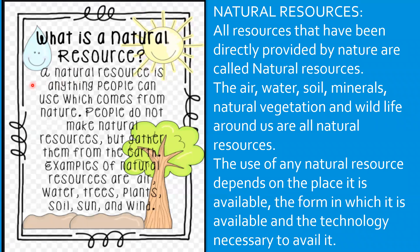A natural resource is anything people can use which comes from nature. People do not make natural resources, but they can gather them from the earth. Examples of natural resources are air, water, trees, plants, soil, sun, and wind. All resources that have been directly provided by nature are called natural resources. The air, water, soil, minerals, natural vegetation, and wildlife around us are examples of natural resources. The use of any natural resource depends on the place it is available, the form in which it is available, and the technology necessary to avail it.